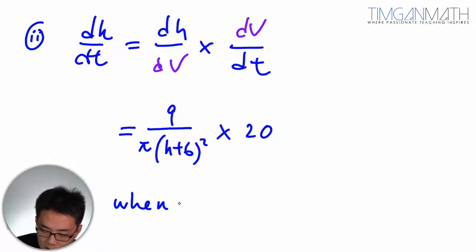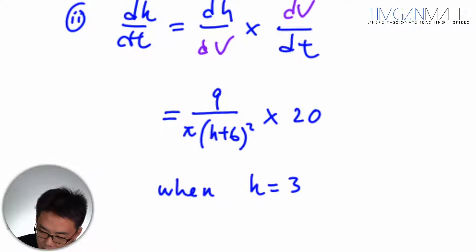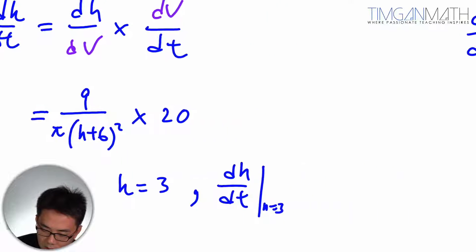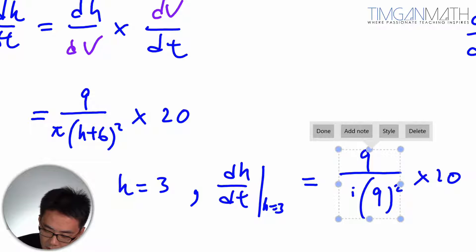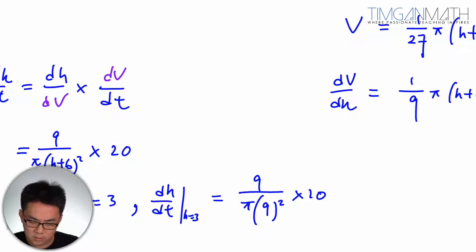When h equals 3, dh/dt would be 9 over π times (3+6)² times 20. There you go, this is the answer, which simplifies to 20/(9π).